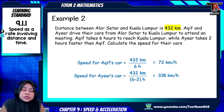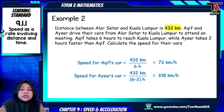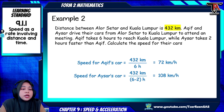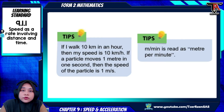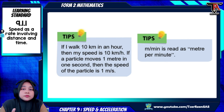If the question asks something else — such as who is faster or what the difference between their speeds is — you just need to do further calculation. From those two examples, the way to find speed is using the formula: speed equals distance over time. Before we conclude, here are some tips you can also find in the textbook.